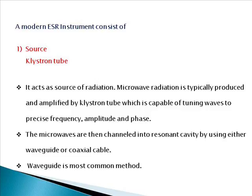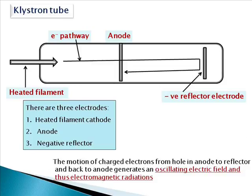How are electromagnetic or microwave radiations generated in the klystron tube? The klystron tube contains three electrodes: a heated filament cathode, an anode, and a negative reflector. When the heated filament cathode emits an electron, it passes through the hole in the anode and strikes the highly negative reflector. Since both the reflector and the electron carry negative charge, repulsion occurs and the electron is sent back to the anode. This motion of electrons from the anode hole to the reflector and back generates an oscillating electric field.